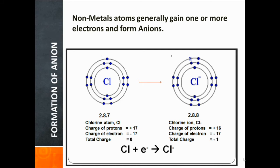Non-metals generally gain one or more electrons and form anions. Consider the example of chlorine — atomic number 17, therefore having 17 protons (+17 charge) and 17 electrons (−17 charge), so there is no overall charge on the chlorine atom. Chlorine gains one electron to complete its valence shell. The new configuration will be 2, 8, 8 — K shell 2 electrons, L shell 8 electrons, M shell 8 electrons, total 18 electrons. It becomes 17 − 18 = −1 charge, so chlorine has a −1 charge.